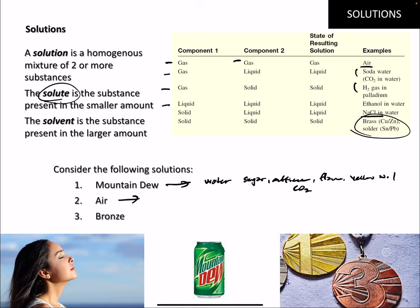Air is another solution — gases dissolved in gases. The solvent is nitrogen, which makes up over 70% of air. Then you've got about 20% oxygen, which we consider a solute, along with CO2 and a tiny bit of helium. Bronze is mostly copper — it's a solution of metals, an alloy.